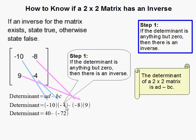Alright, so we get negative 10 times negative 4, we get 40. Negative 8 times 9 is negative 72, minus a negative. So the determinant is 112.